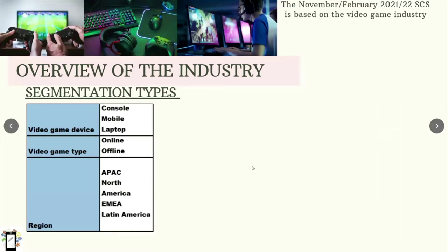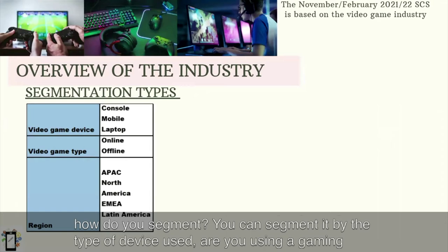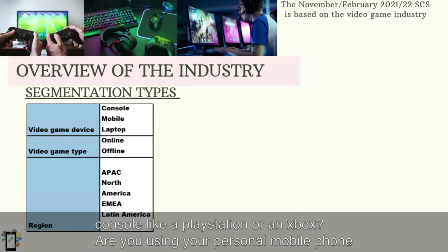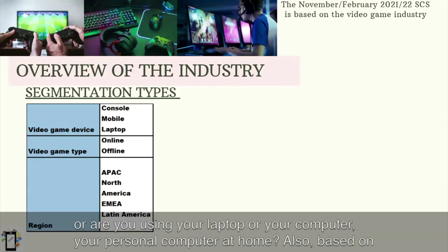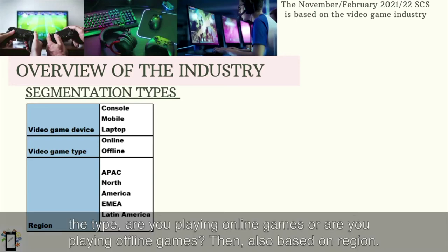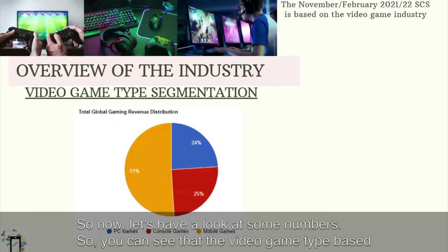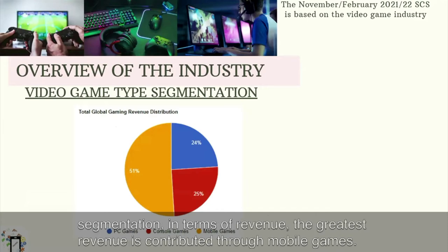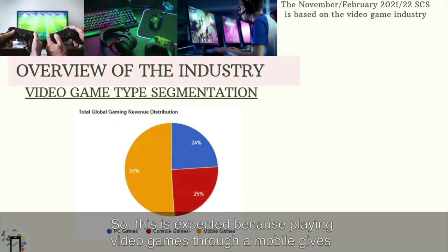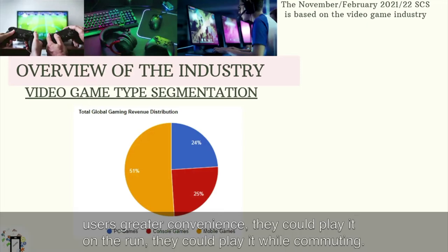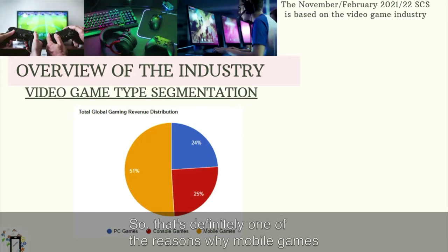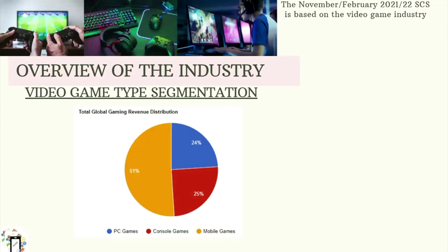Looking at segmentation, you can segment the industry by the type of device used — are you using a gaming console like a PlayStation or an Xbox, your personal mobile phone, or your personal computer? Also based on game type — are you playing online or offline games? And also based on region. In terms of revenue, the greatest contribution comes through mobile games, because playing video games through a mobile gives users greater convenience — they could play it on the run or while commuting.